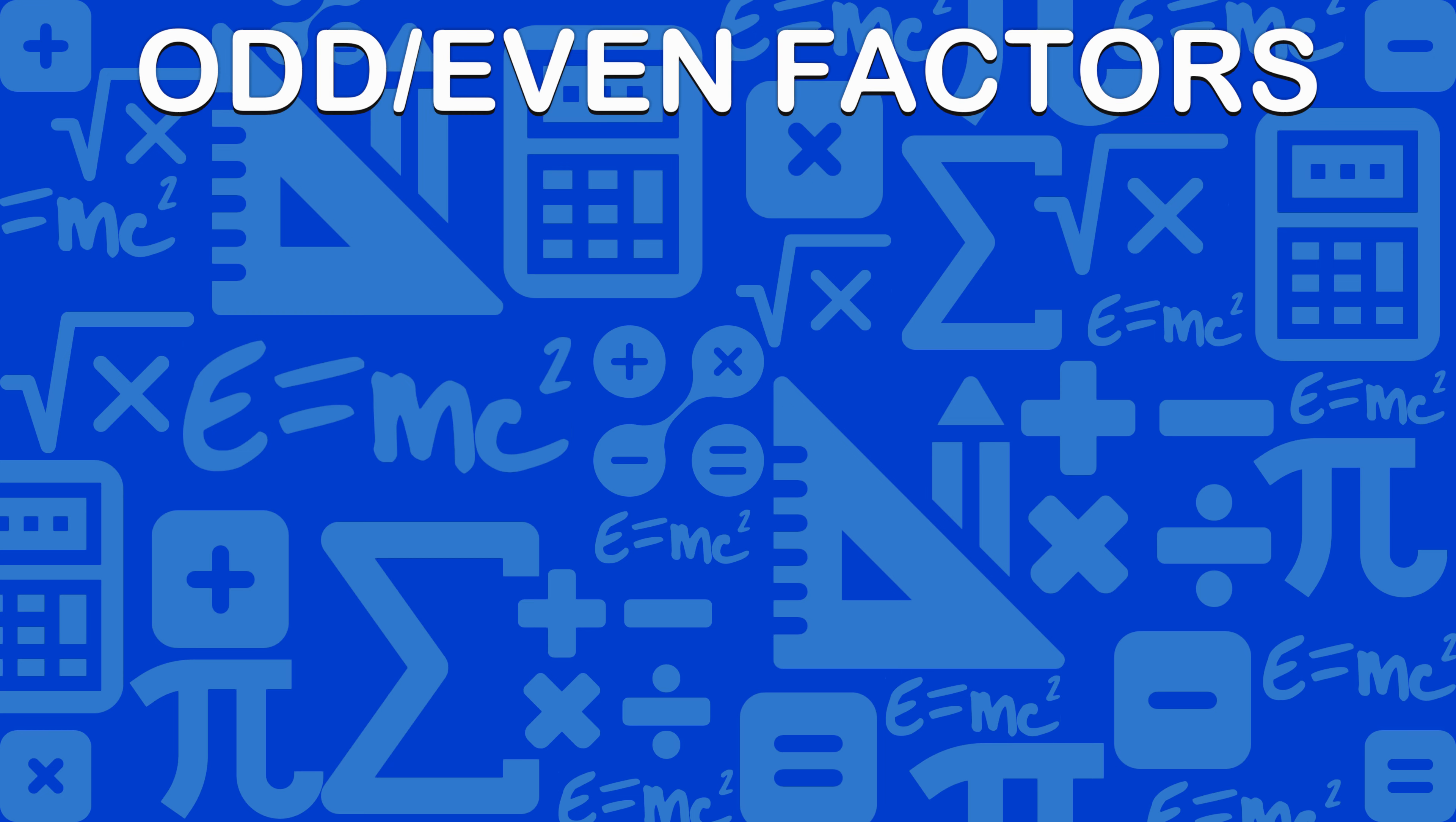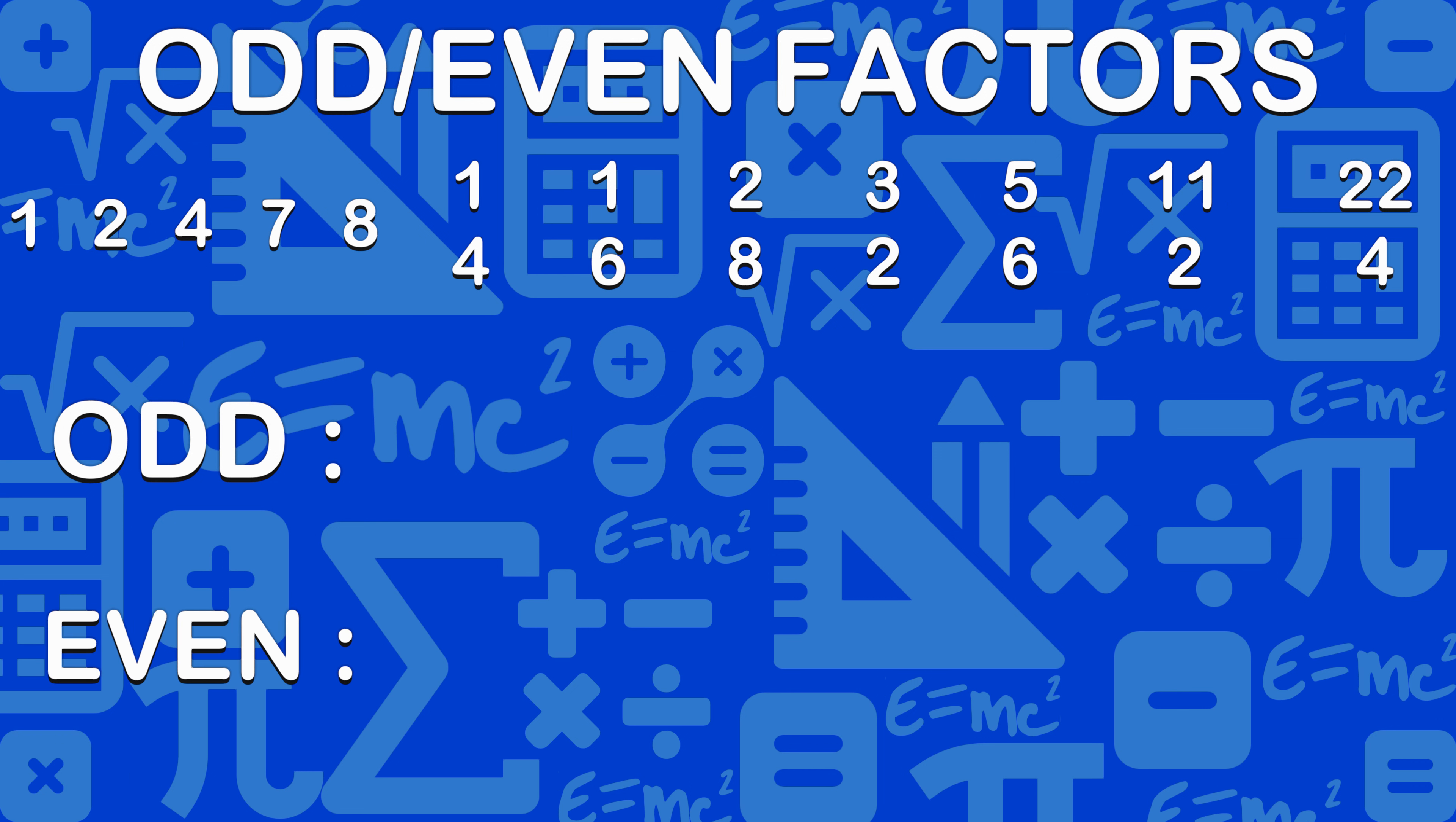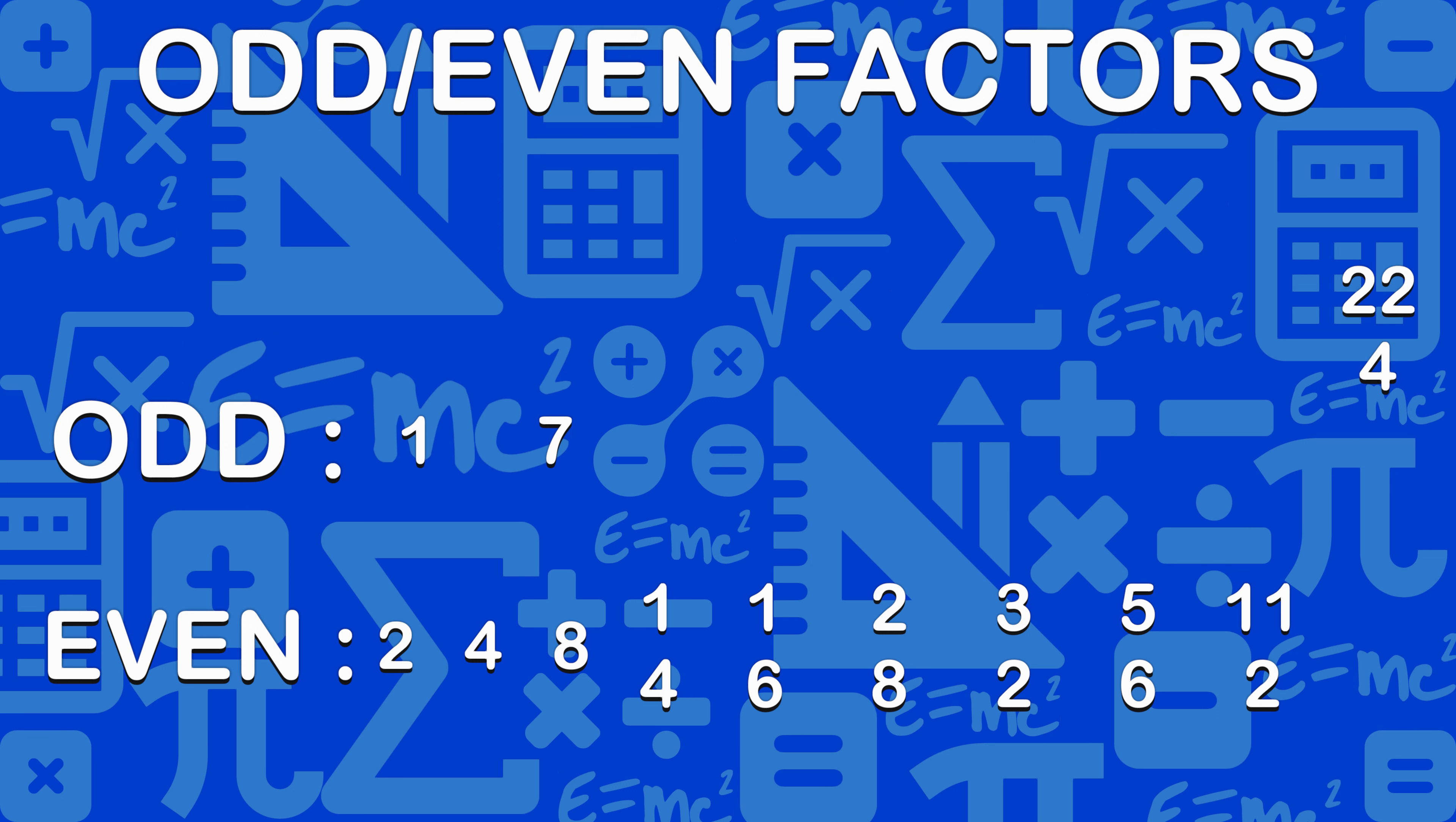Let's have a look at odd and even factors. Odd factors: 1, 7. Even factors: 2, 4, 8, 14, 16, 28, 32, 56, 112, 224.